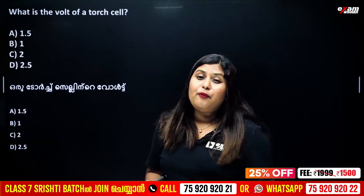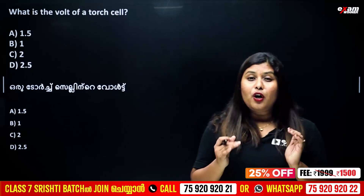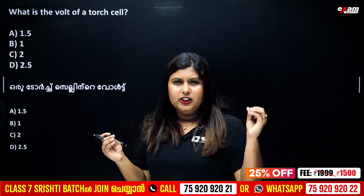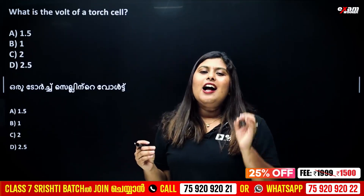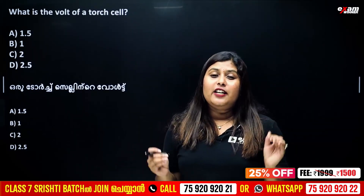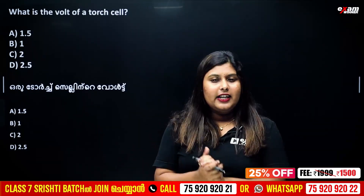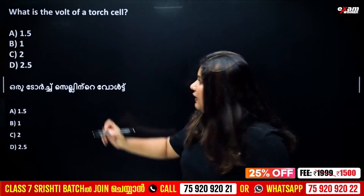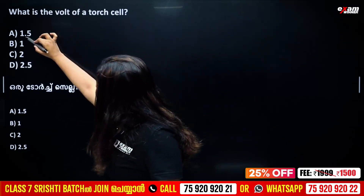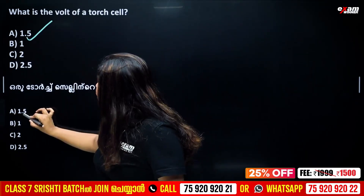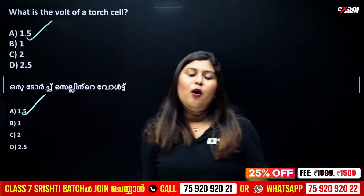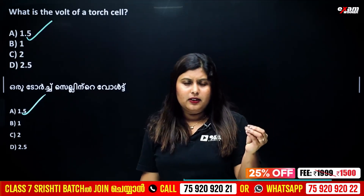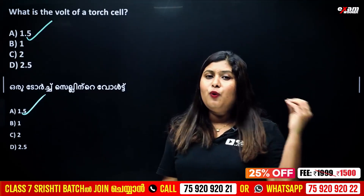What is the voltage of a torch cell? The voltage is 1.5 volt. So the answer is 1.5 volt.